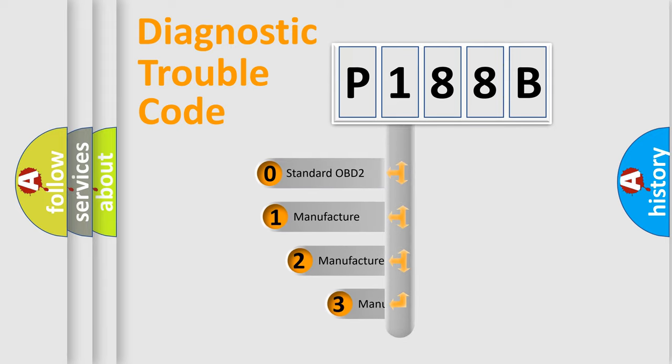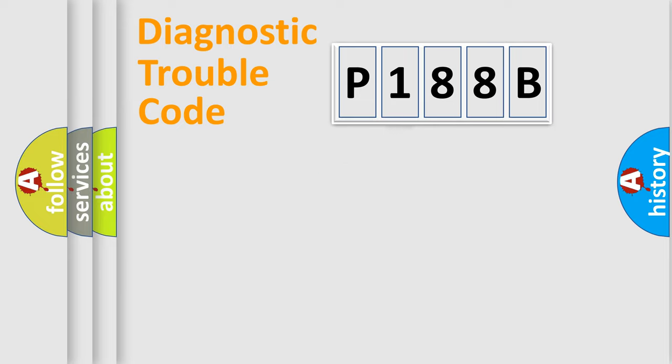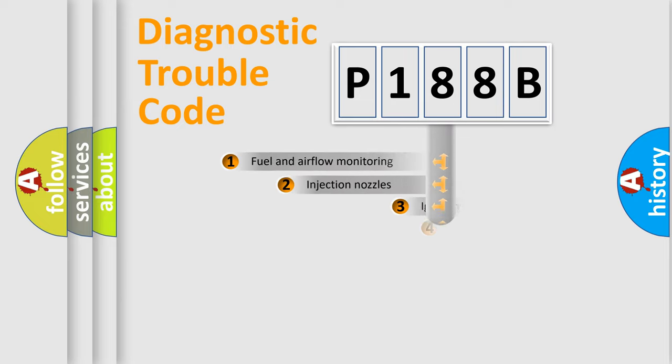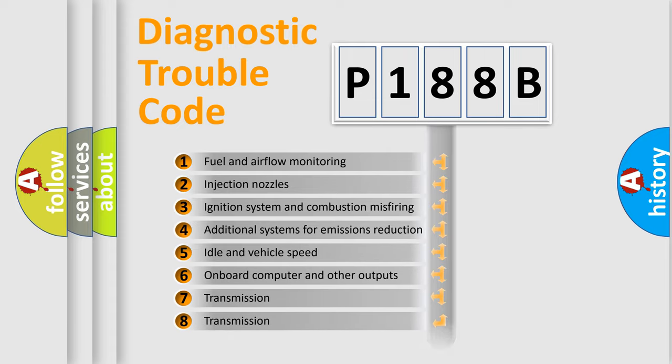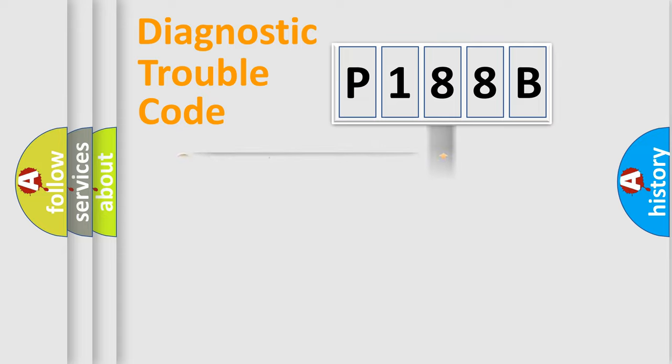If the second character is expressed as zero, it is a standardized error. In the case of numbers 1, 2, or 3, it is a manufacturer-specific expression of the car-specific error. The third character specifies a subset of errors.